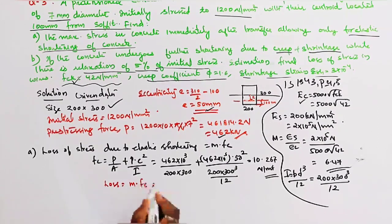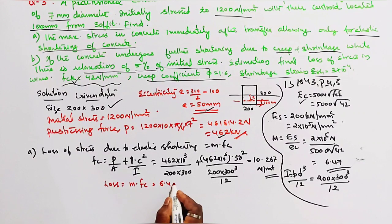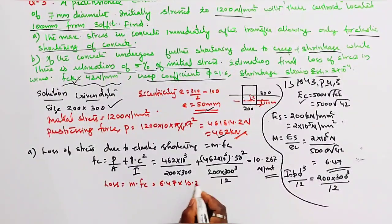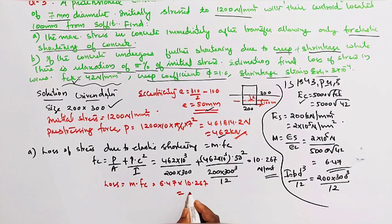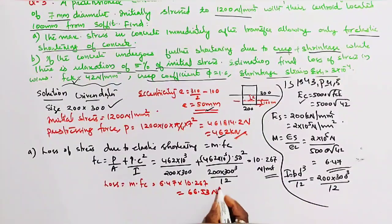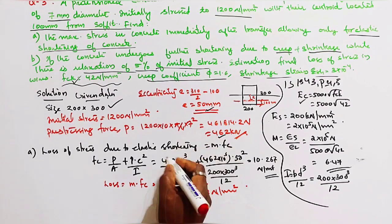Loss due to elastic shortening = m × fc = 6.47 × 10.267 = 66.53 Newton per mm square.